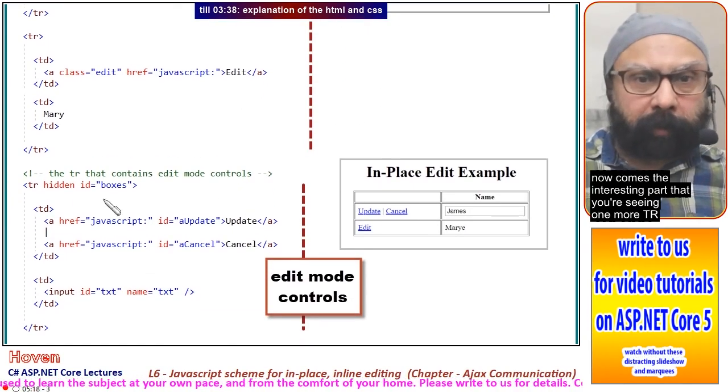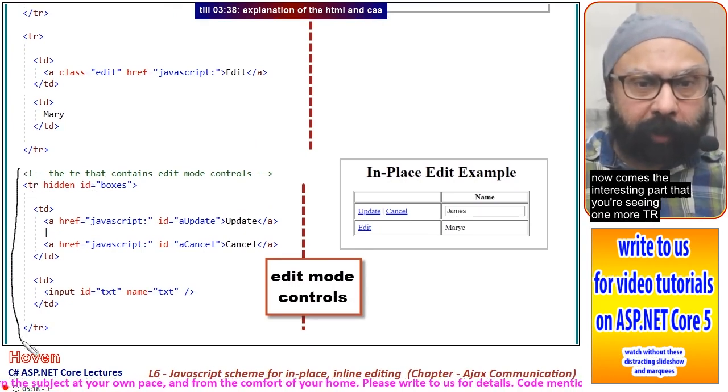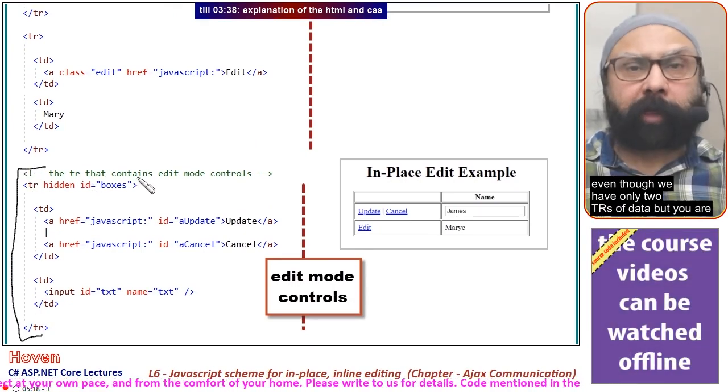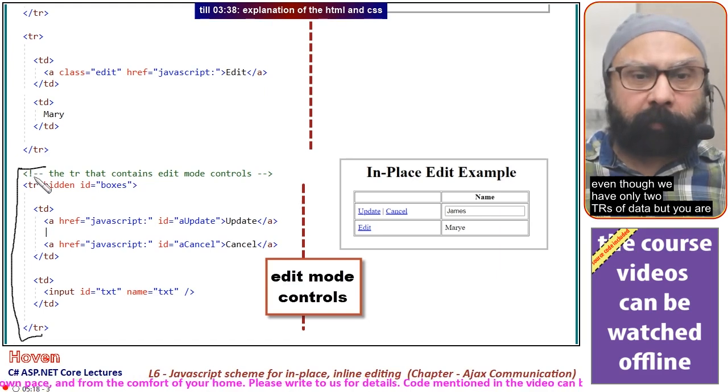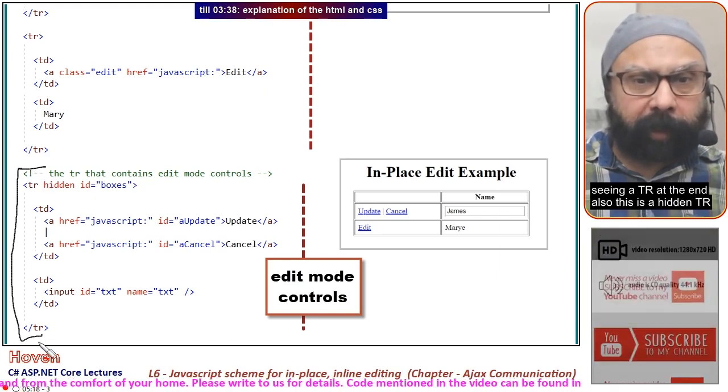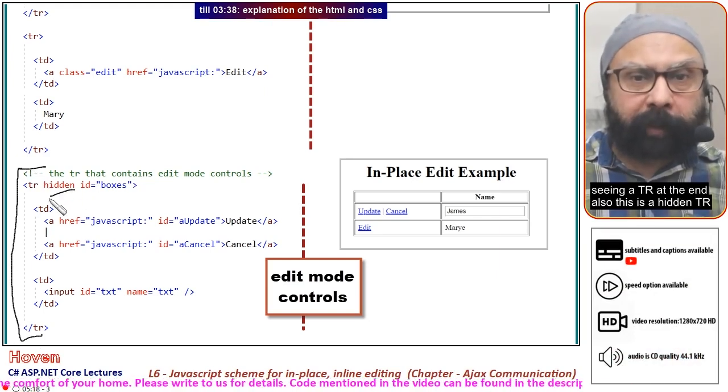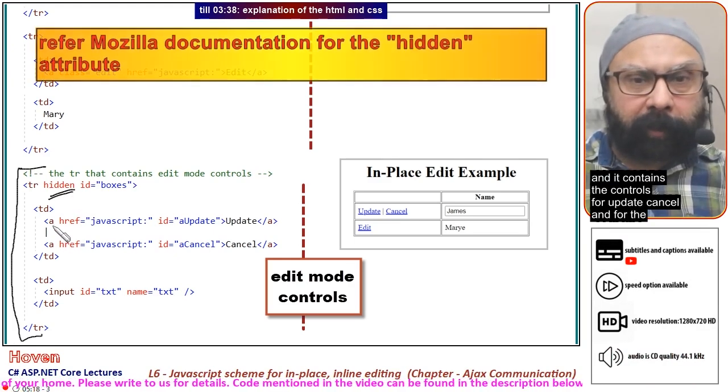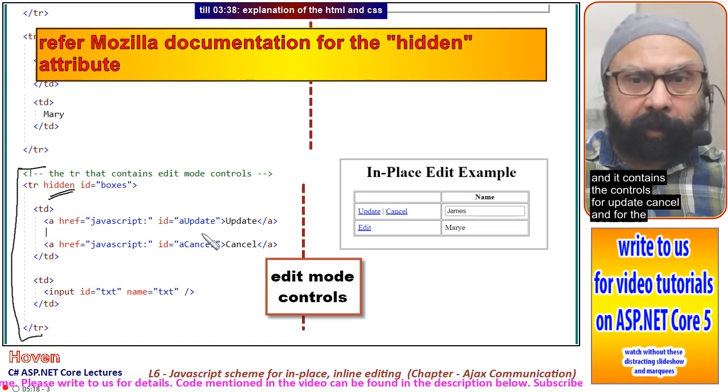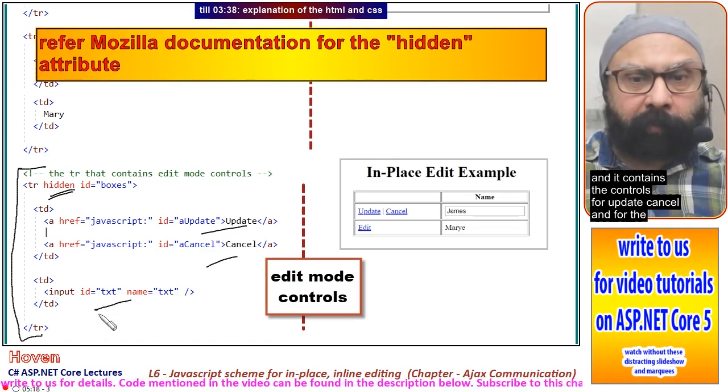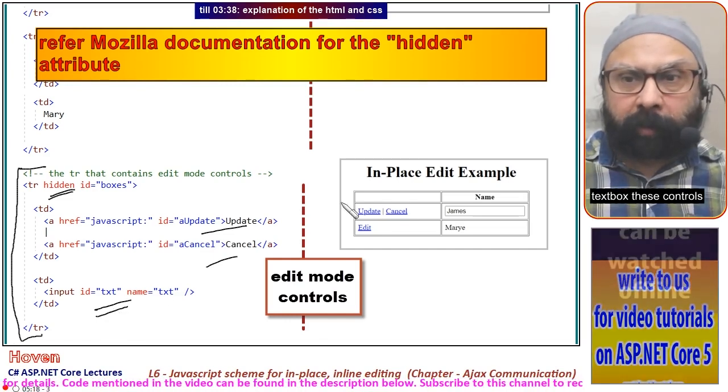Now comes the interesting part: you are seeing one more tr. Even though we have only two trs of data, there is a tr at the end. This is a hidden tr and it contains the controls for update, cancel, and the textbox.